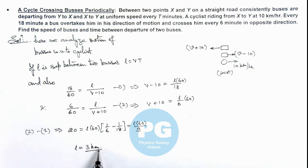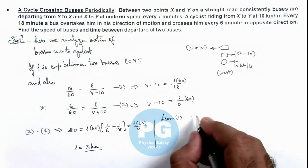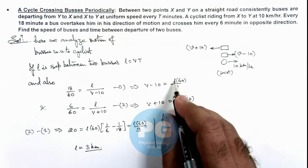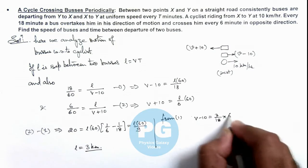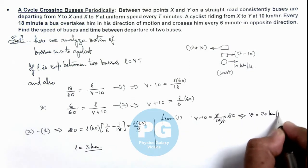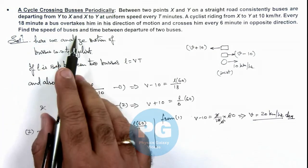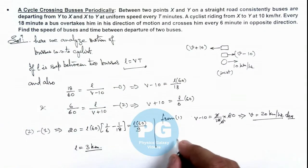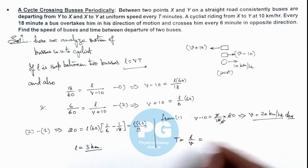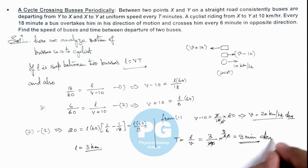The distance between 2 adjacent buses is 3 kilometers. Substituting into equation 1: v − 10 = 3 / (18/60), which gives v − 10 = 10, so v equals 20 kilometers per hour. That is the speed of the buses. Using L = v × t, we get t = 3/20 hours, which in minutes equals 9 minutes. So the time between departure of 2 buses is 9 minutes.